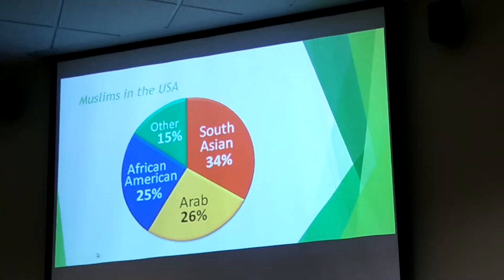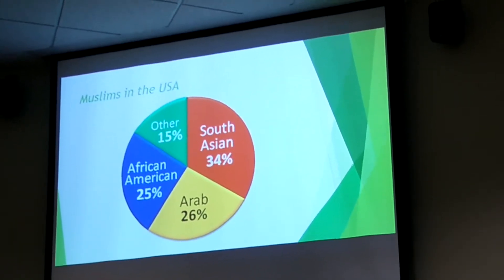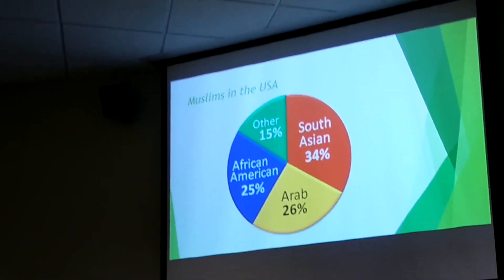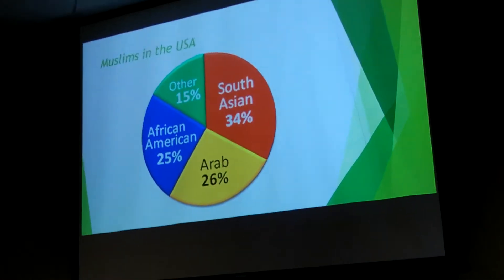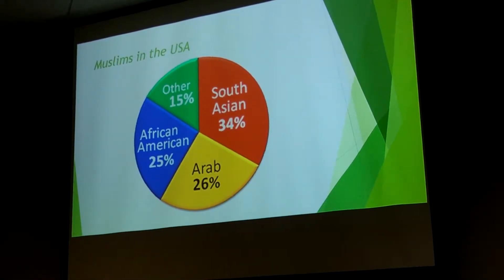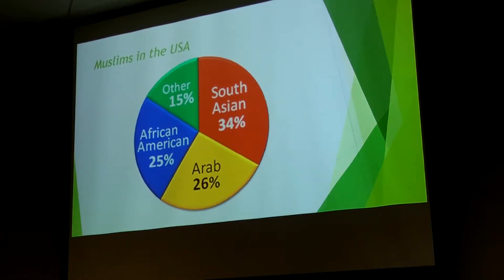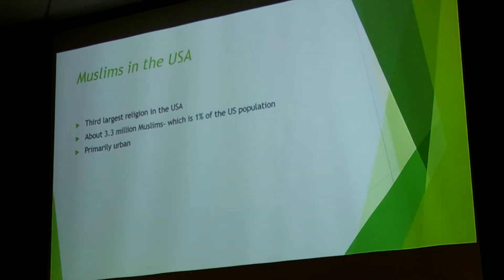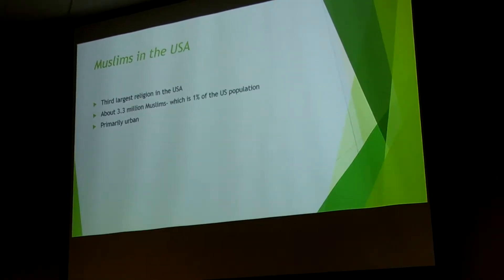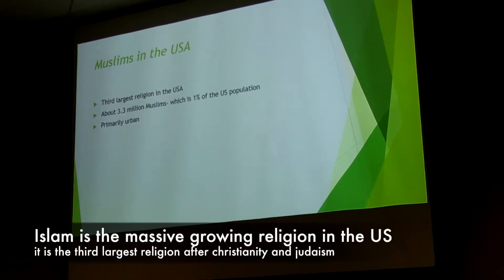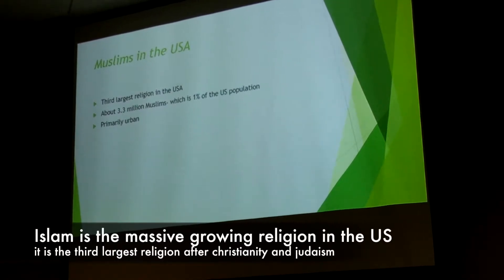Here is a contemporary breakdown of where Muslims in the USA come from. The biggest percentage currently is from South Asia, then Arab Americans, then African Americans, with 'other' including Southeast Asians and native-born or white Americans. It's about one percent of the population, but Islam is said to be the fastest-growing religion in the U.S. and the third largest after Christianity and Judaism.